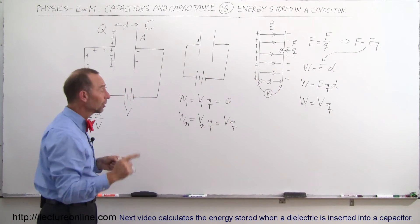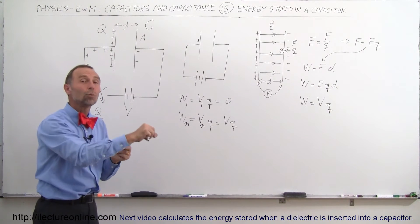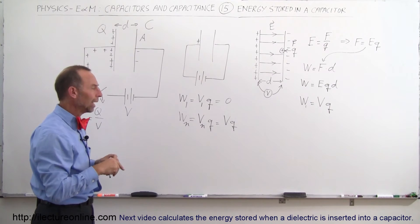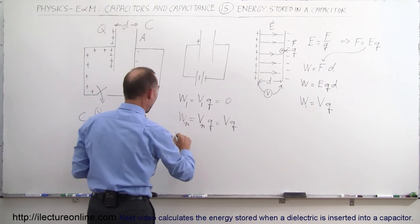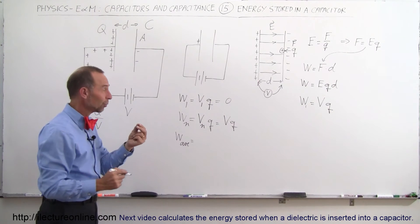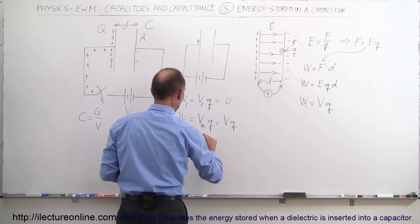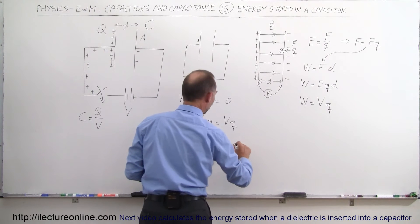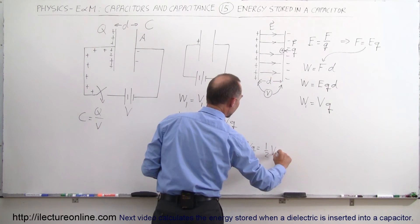So what would be the average amount of work it takes to put an average charge on there during this process? The average work is simply equal to the work for the first one plus the work for the last one, divided by 2. That gives you the average: work for the first one plus work for the last one, divided by 2, which equals zero plus V times Q, divided by 2 — which is one-half V times Q. That's the average amount of work it takes to put one charge onto the capacitor plate.